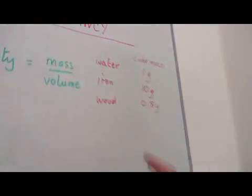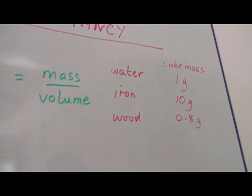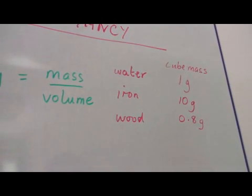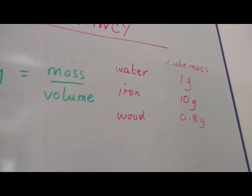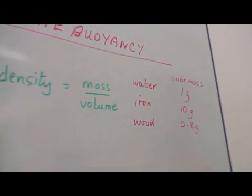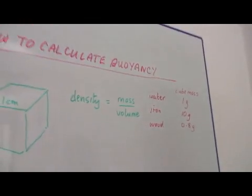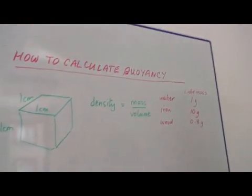If this same cube were made of iron it would have a mass of ten grams. If the same cube were made of wood it would have a mass of zero point eight grams.